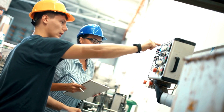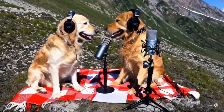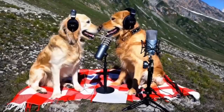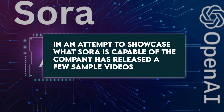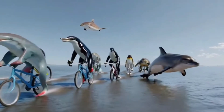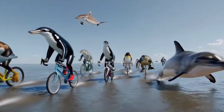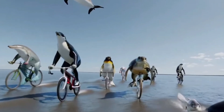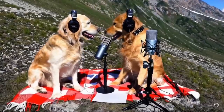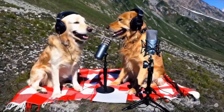Industry observers nonetheless highlight the remarkable duration and high quality of the Sora videos that have been released so far. In an attempt to showcase what Sora is capable of, the company has released a few sample videos. Sam Altman, the CEO of OpenAI, also asked social media users to submit prompt ideas on X, the website originally known as Twitter. He then posted incredibly detailed short videos in response to phrases like "A bicycle race on the ocean with different animals as athletes riding the bicycles using a drone camera view" and "Two golden retrievers podcasting on top of a mountain."